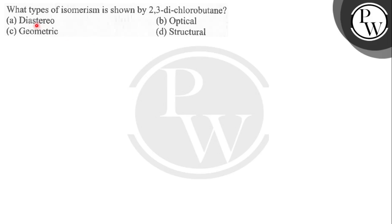Hello dear students. Our question is: what types of isomerism is shown by 2,3-dichlorobutane?